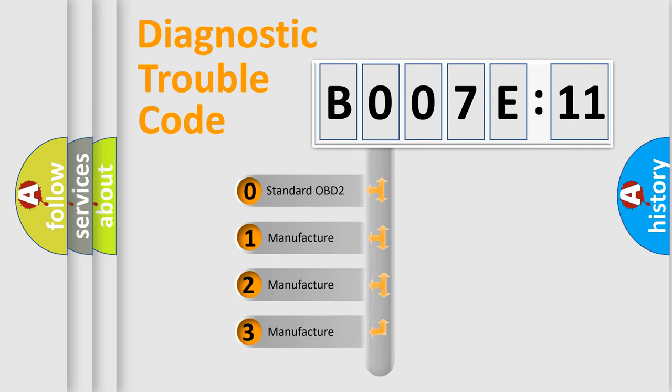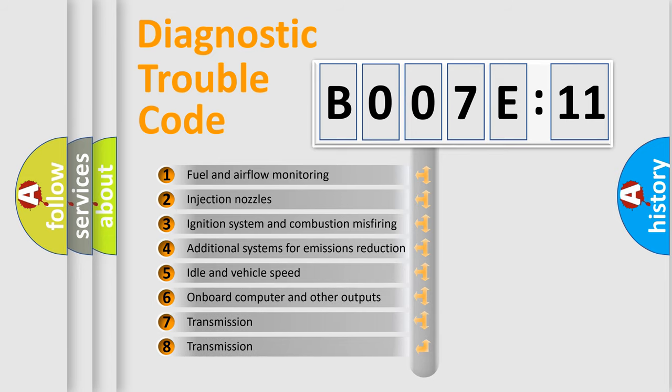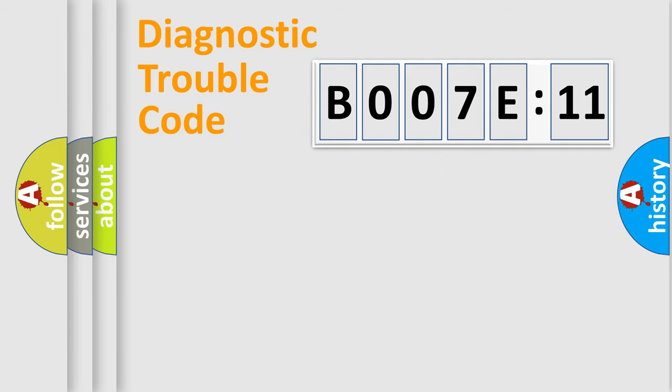If the second character is expressed as zero, it is a standardized error. In the case of numbers 1, 2, or 3, it is a manufacturer-specific error. The third character specifies a subset of errors. The distribution shown is valid only for the standardized DTC code. Only the last two characters define the specific fault of the group.